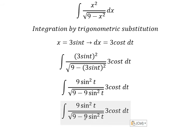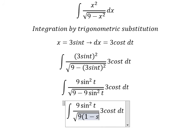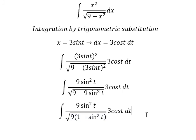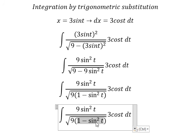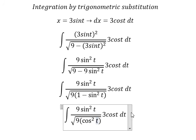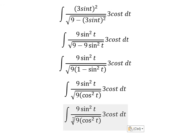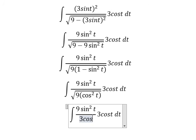So number 9, we can do factorization. This one we change to cos² t. The square root of 9 cos² t, we have 3 cos t.